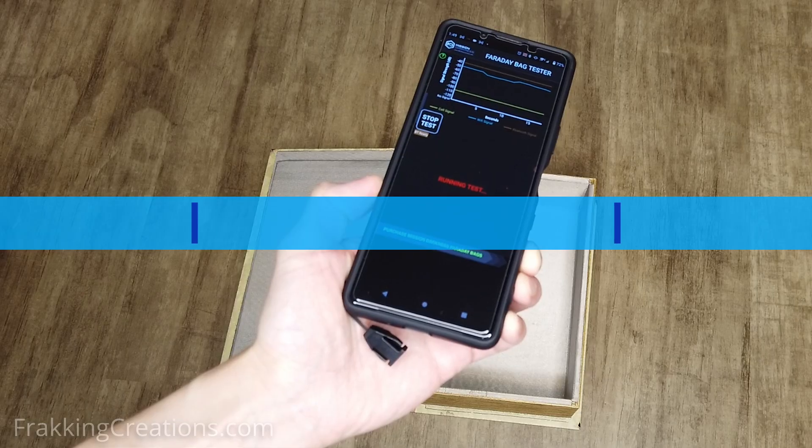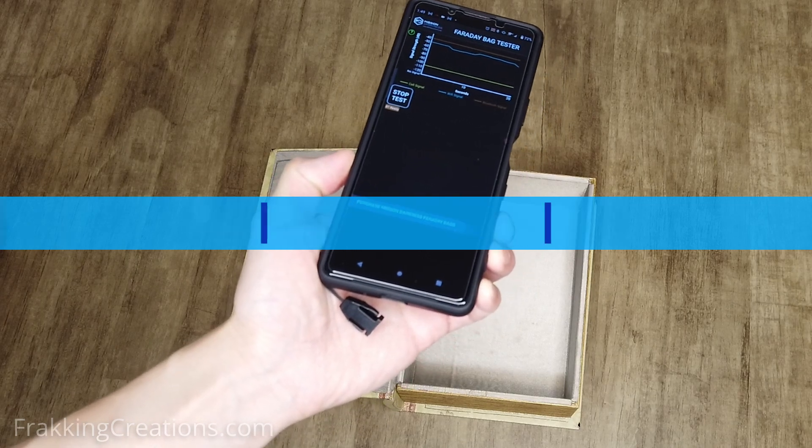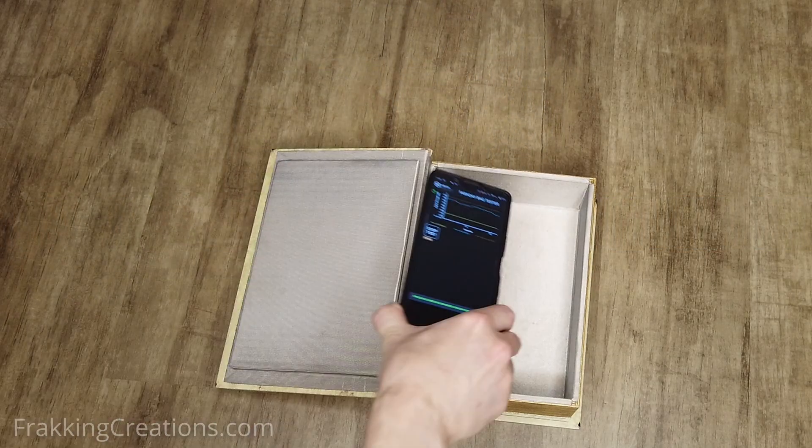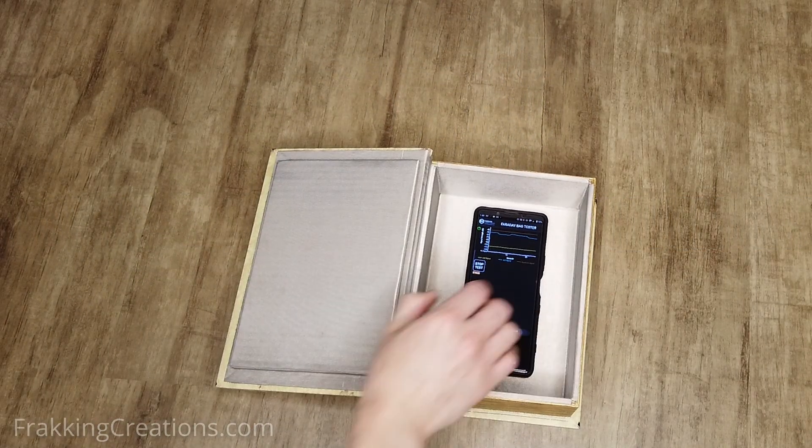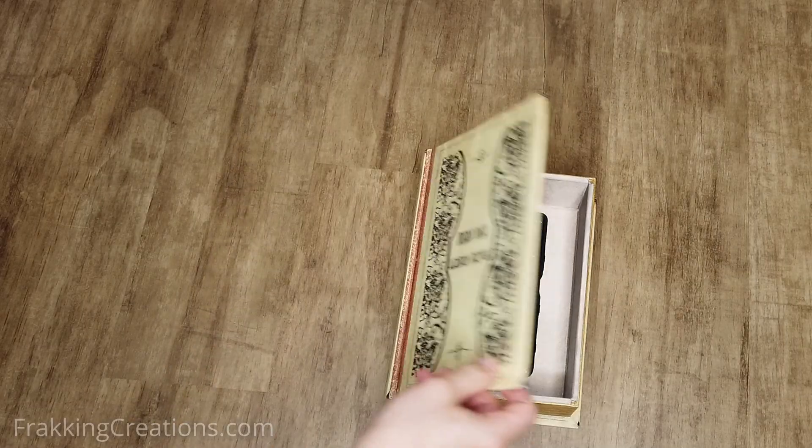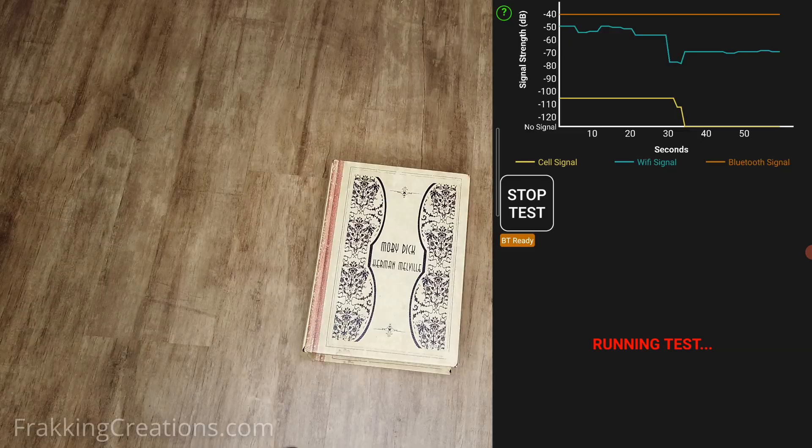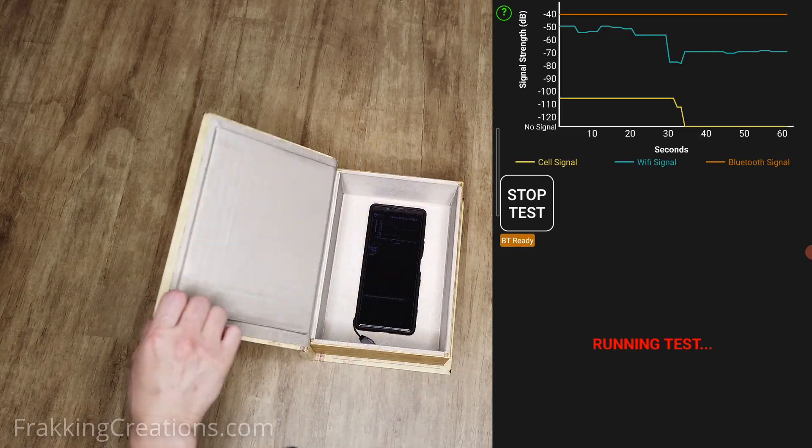Testing first attempt. At this point the box looks great, but we need to test. I get some baseline readings for cell, Bluetooth, and Wi-Fi signal strength before sealing the smartphone with the app running into the box. The test is run for about 30 seconds.